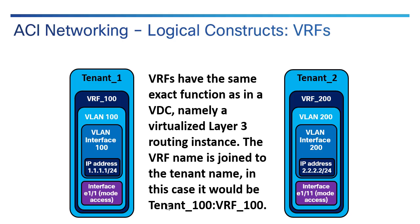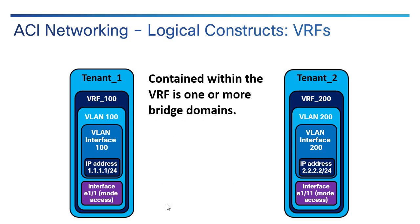Within a tenant is a VRF. Unlike VDCs, VRFs do not exist independently in ACI — a VRF lives inside a tenant and does the same thing a VRF does; there's really no difference. One thing that is different, however, is the tenant name gets joined to the VRF name. For example, if it's VRF_100, the name as far as ACI is concerned is Tenant100:VRF100. So you have tenant, and inside the tenant are VRFs. You can think of this as Russian nested dolls — one inside another: the tenant is the outer shell, the VRF inside that.